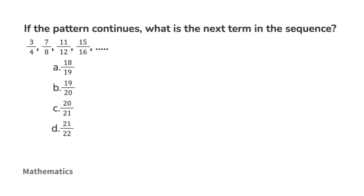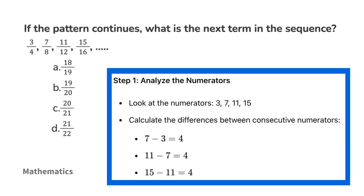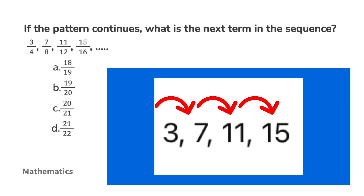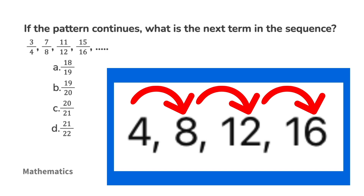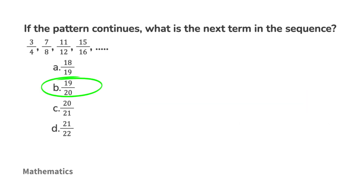If the pattern continues, what is the next term in the sequence? Analyze the numerators: 3, 7, 11, 15 — they increase by 4 each time. Analyze the denominators: 4, 8, 12, 16 — they also increase by 4 each time. Recognizing the pattern, the next term in the sequence will be 19 over 20.